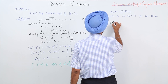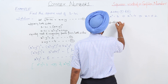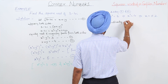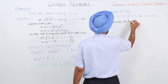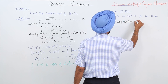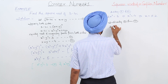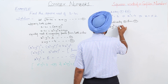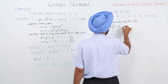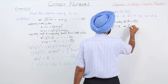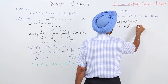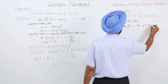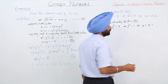Subtracting equation 2 from equation 4: 2y squared is equal to 2, so y squared is equal to 1, and y is equal to plus or minus 1.